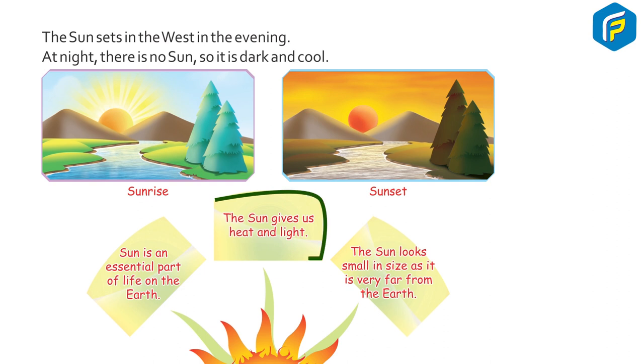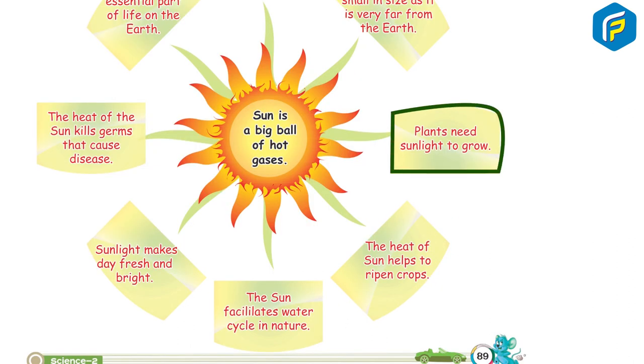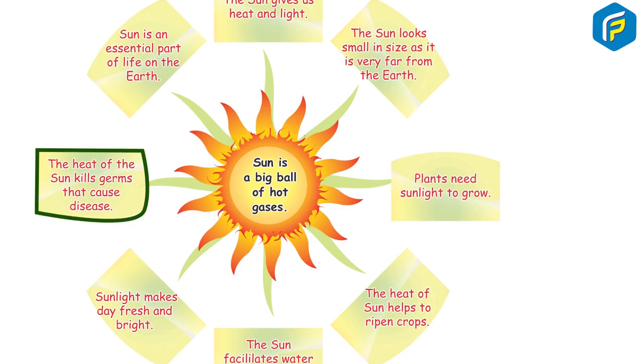Sunrise and sunset. The Sun gives us heat and light. The Sun looks small in size as it is very far from the Earth. Plants need sunlight to grow. The heat of the Sun helps to ripen crops. The Sun facilitates water cycle in nature. Sunlight makes day fresh and bright. The heat of the Sun kills germs that cause diseases. Sun is an essential part of life on Earth.